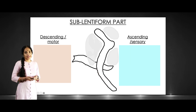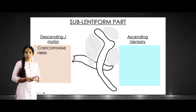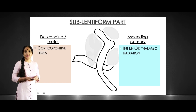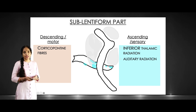The last part is the sublentiform part. The descending or motor fibers are again corticopontine fibers, and the ascending fibers are the inferior thalamic radiation, which carry the auditory pathway.